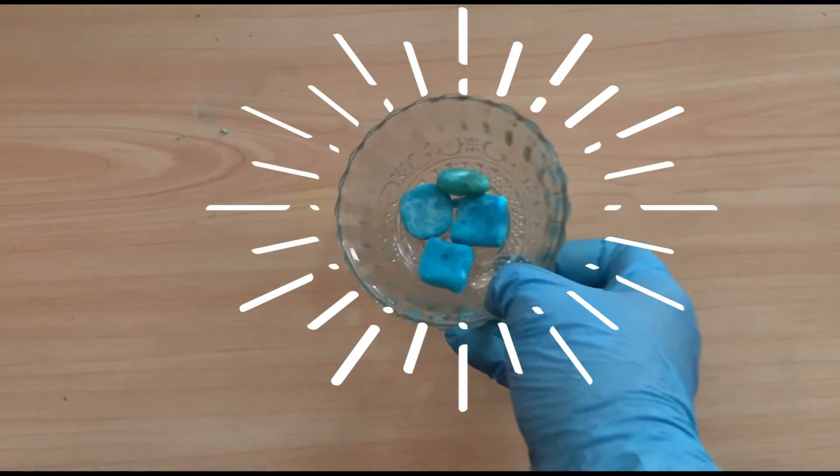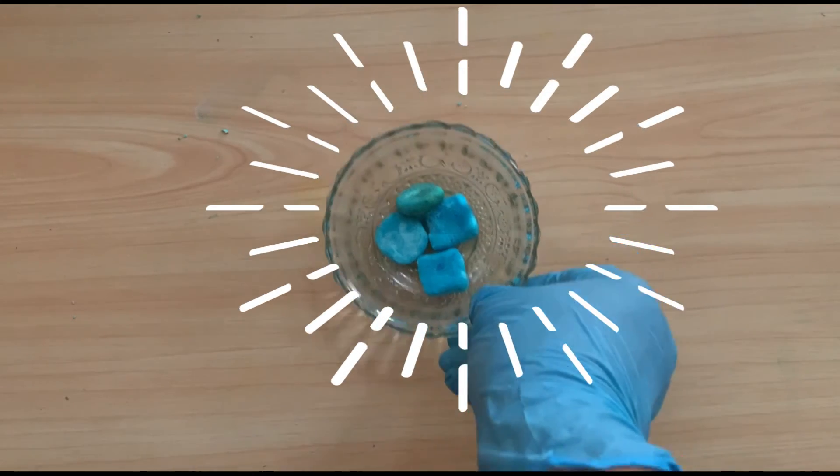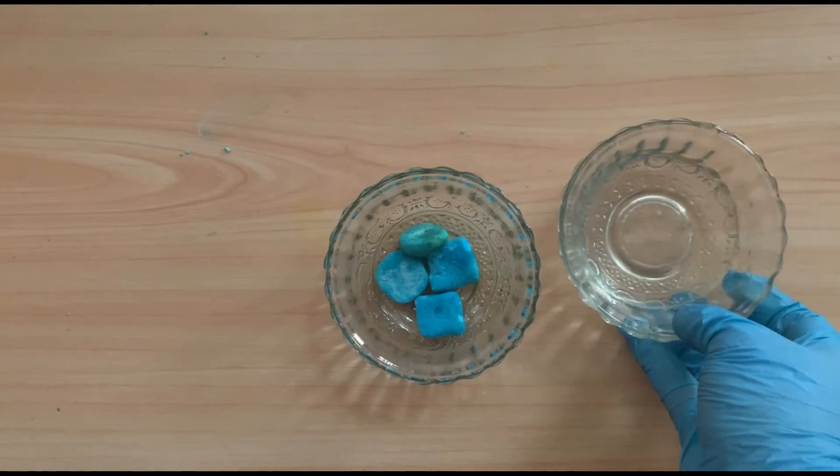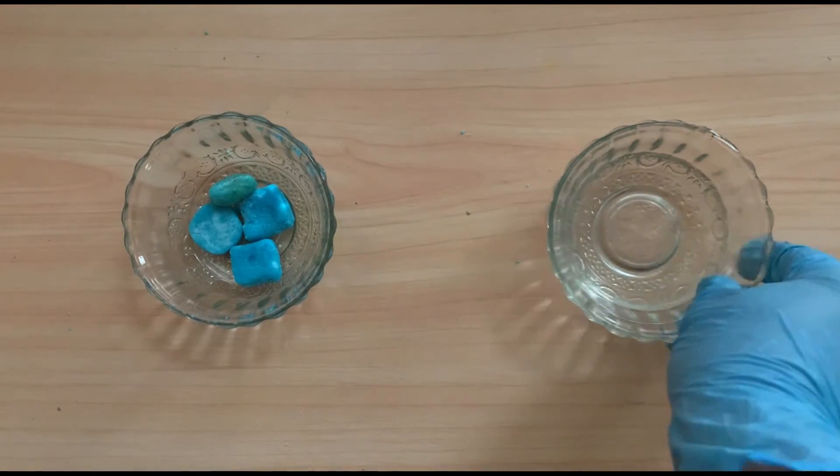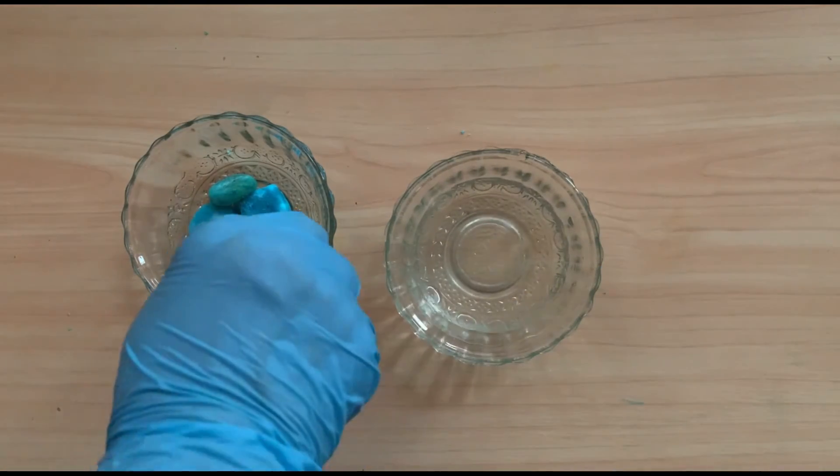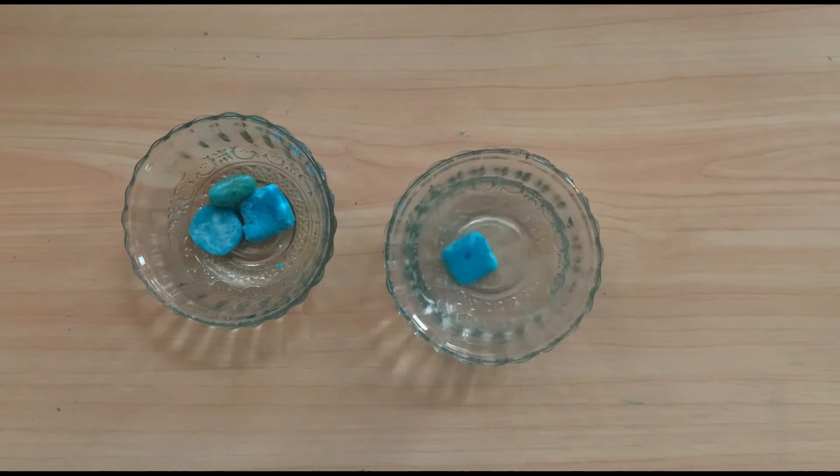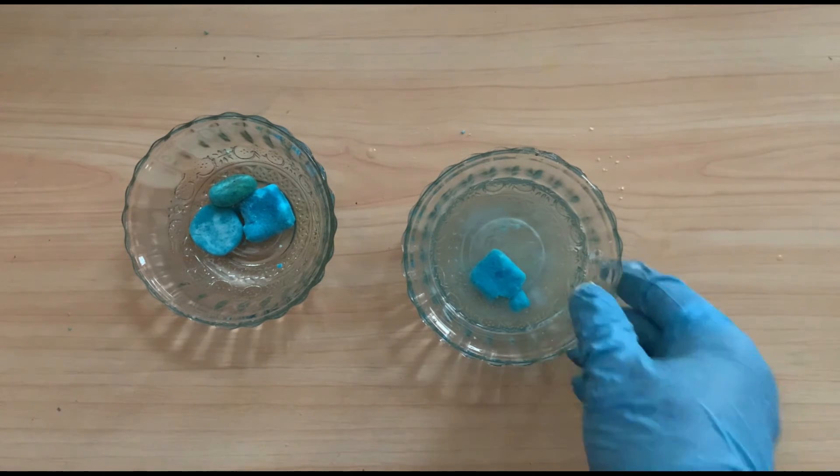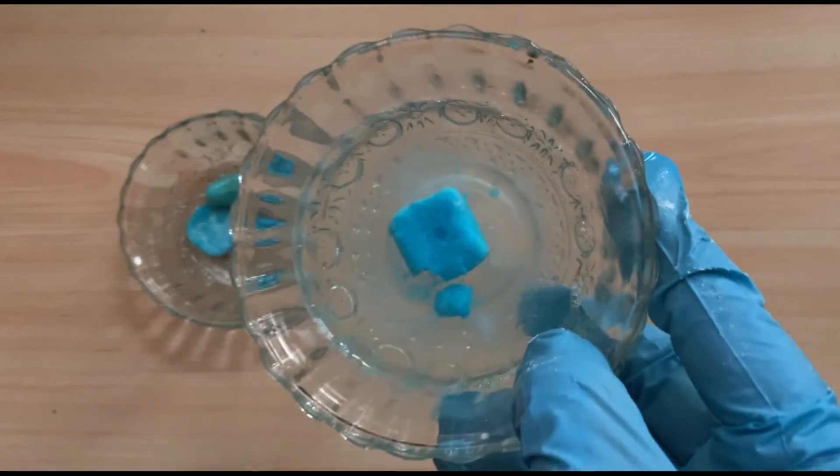See, now your toilet bowl tablets are ready. Now I am showing you how you will use in the bowl. For that, take one or two tablets and put in the toilet bowl. Then leave it for some time. It will dissolve very slowly. See how it is dissolving.